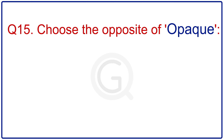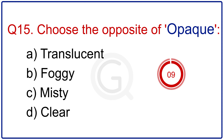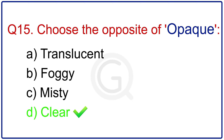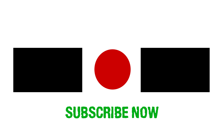Choose the opposite of opaque. The right answer is clear. Check out our best synonyms quiz from here, and if you like the video please subscribe to our YouTube channel Grammar Quizzes for more upcoming and interesting quizzes. See you in the next quiz. Thank you.